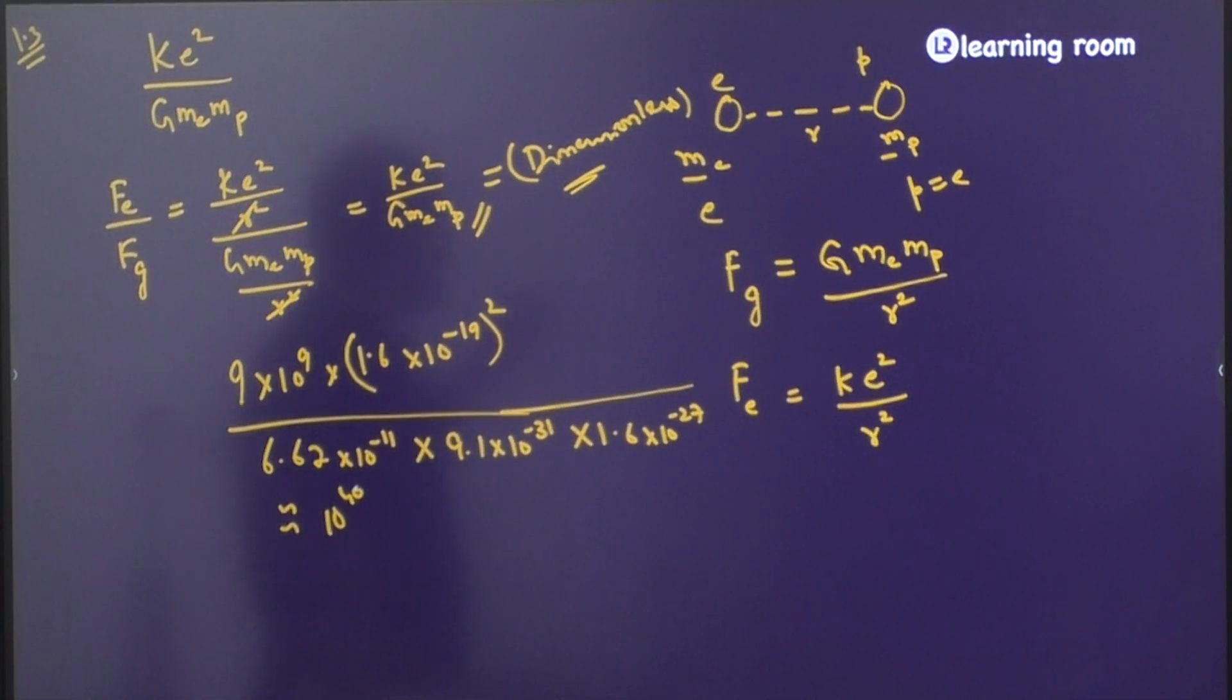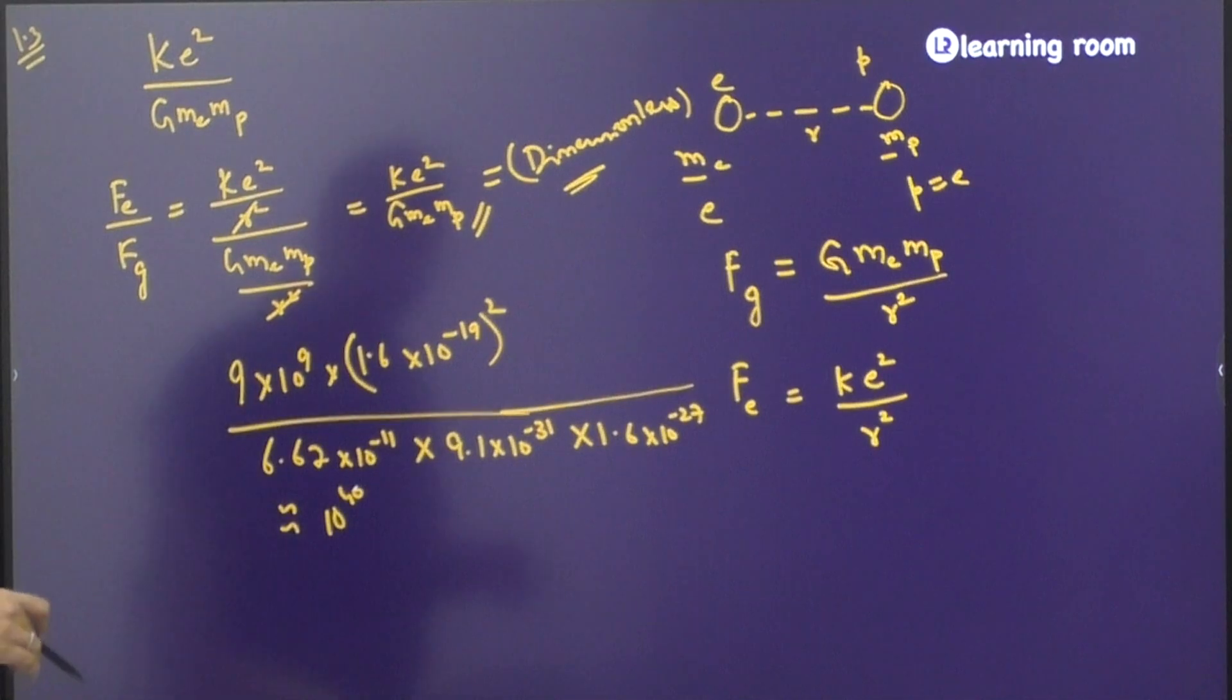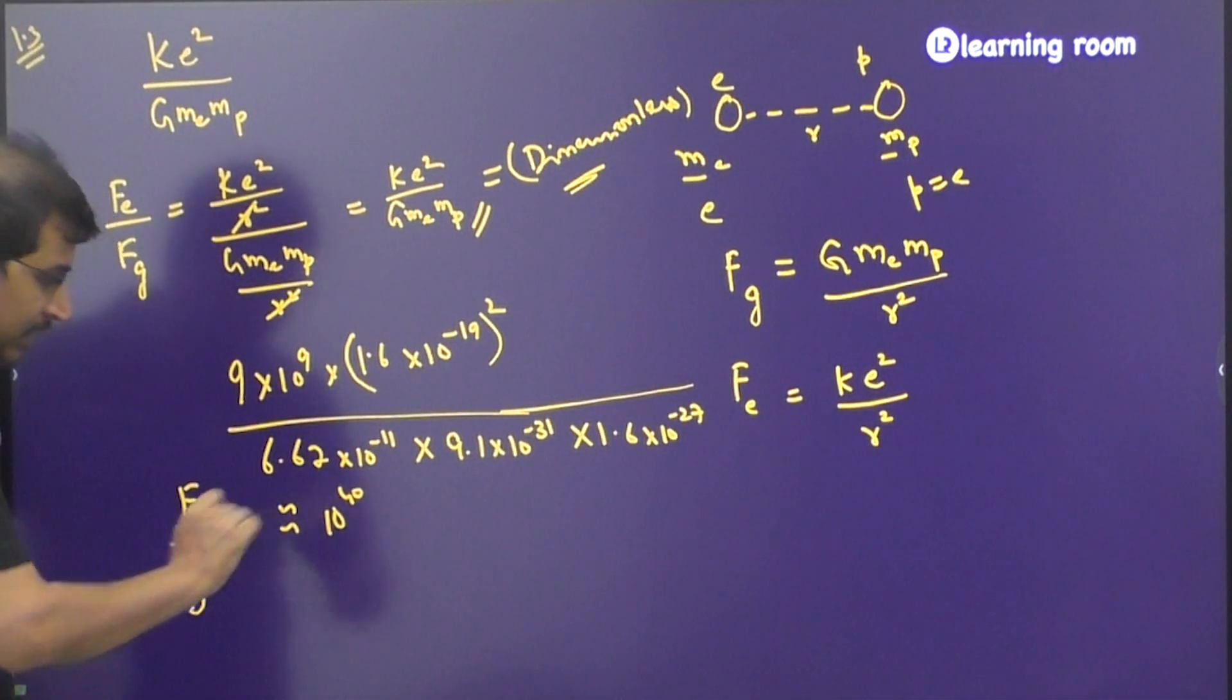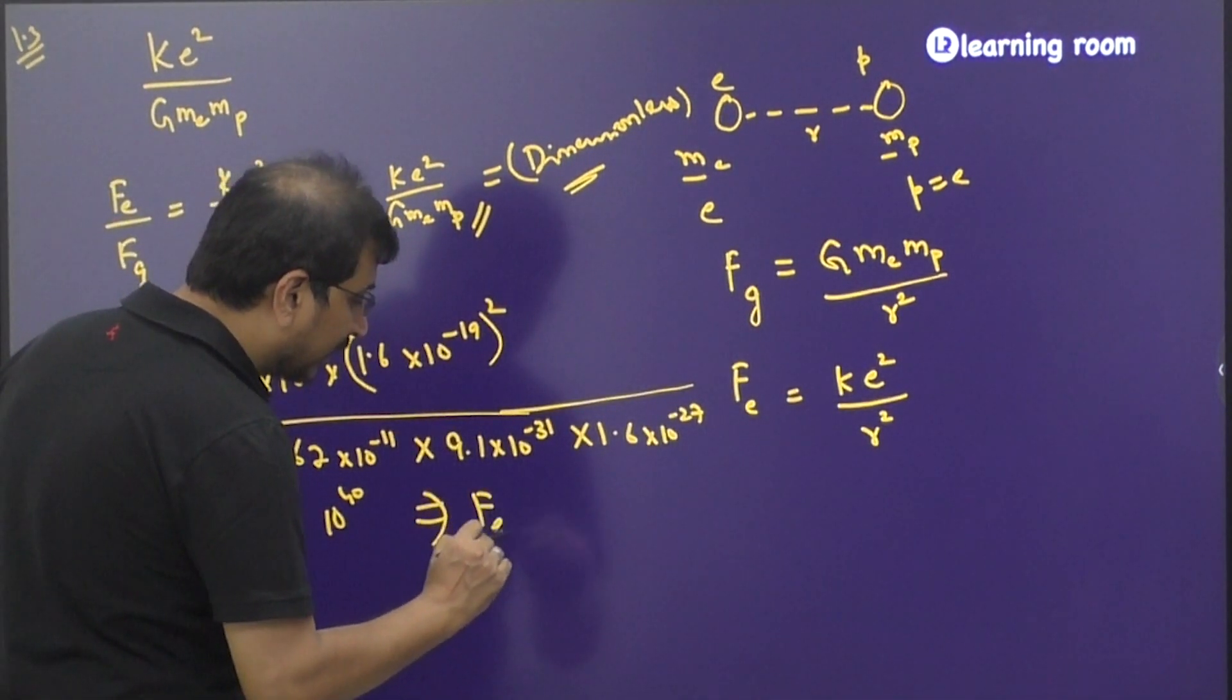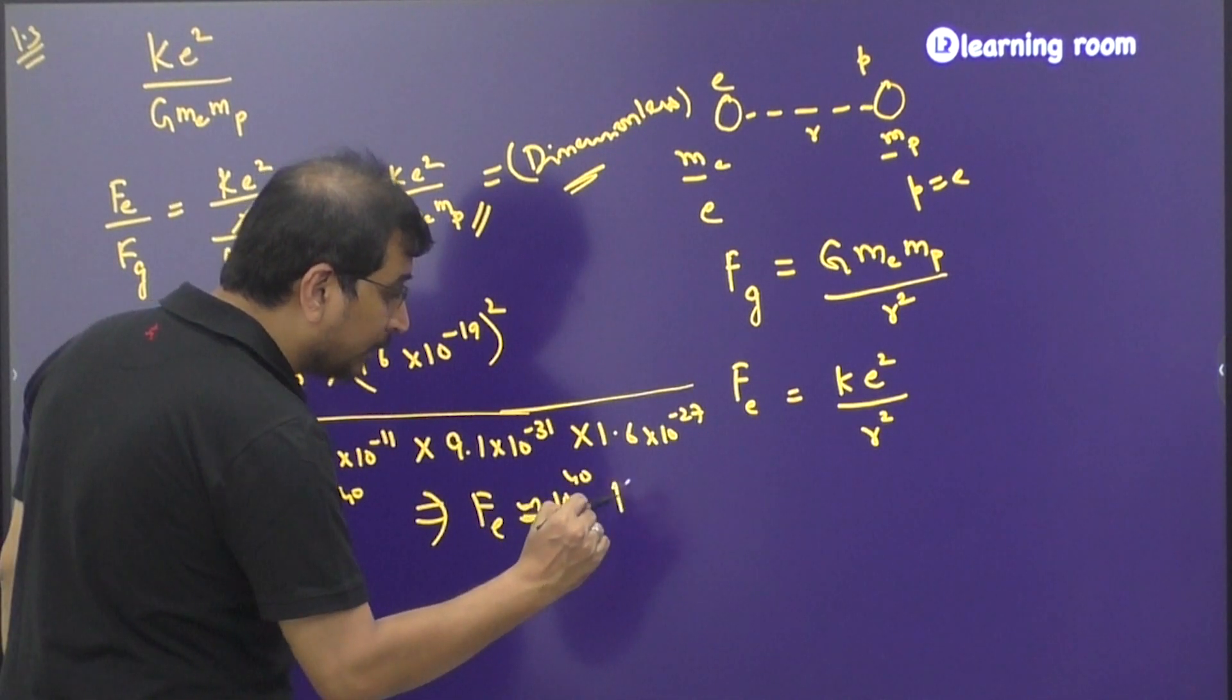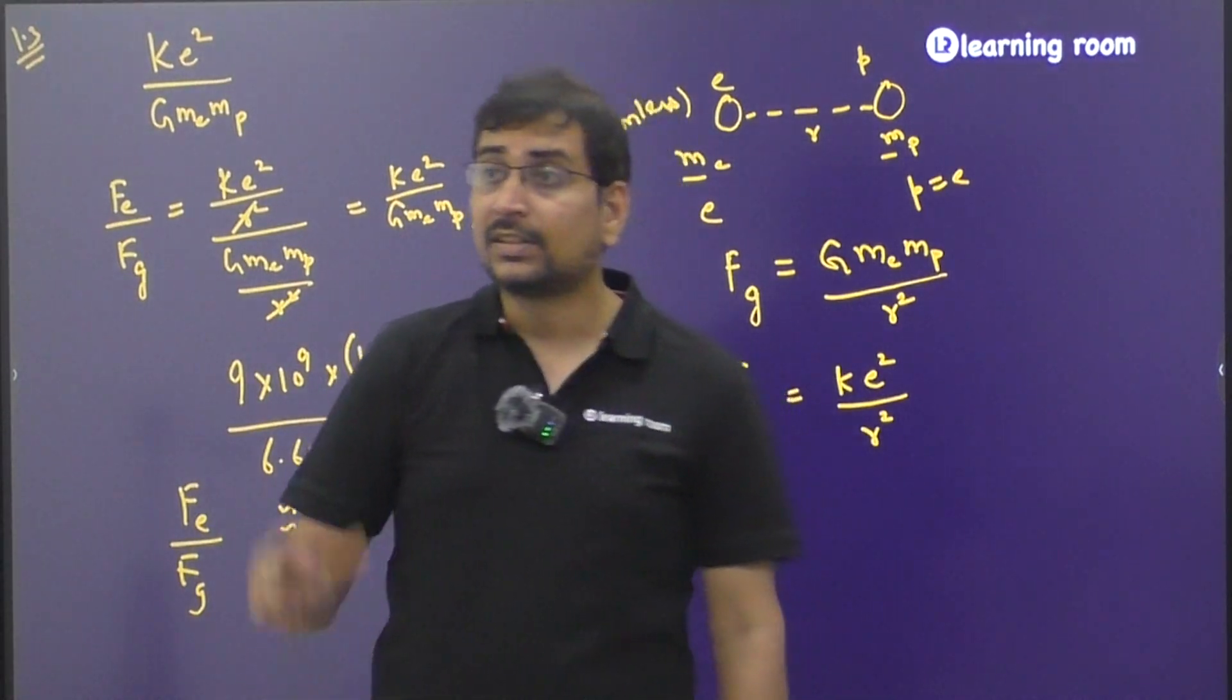The next part of the question they are asking what does this signify? What does this ratio signify? It is very simple. Fe divided by Fg is coming out to be 10⁴⁰ means this implies that the electrostatic force is approximately 10⁴⁰ times greater than the gravitational force. So it is that greater.